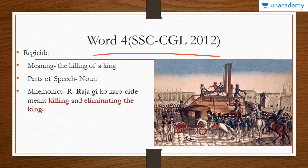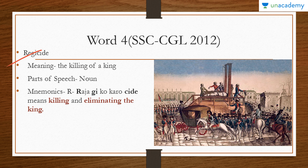Our fourth word, again from the same examination, is 'regicide.' Regicide means the killing of a king. The part of speech is noun. The mnemonic is a bit funny — it mixes Hindi and English. The 'R' in regicide stands for 'raja,' which means king in Hindi. 'Raja ji' — with respect, people used to call the king 'raja ji.'